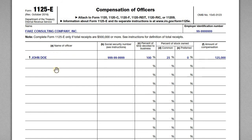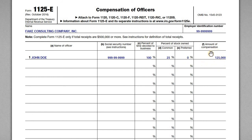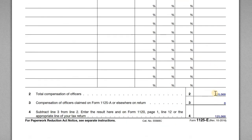In this case we're only listing John, assuming there's no other CFO or COO. If you did have multiple officers, you would have to list every single one with all their information. John's social security number is listed, he spends 100% of his time working for the company, owns 25% of common stock, and 0% preferred stock. The total compensation for all officers should foot down to line 2.